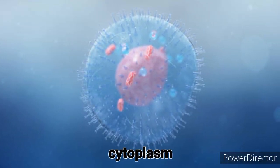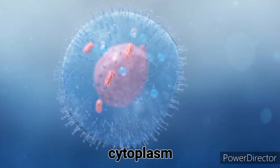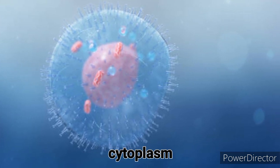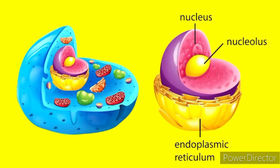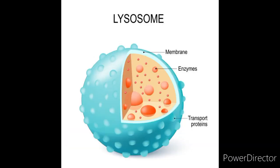Within the cytoplasm, various structures perform specific roles. Organelles. These include mitochondria, endoplasmic reticulum, Golgi apparatus, lysosomes, and more.